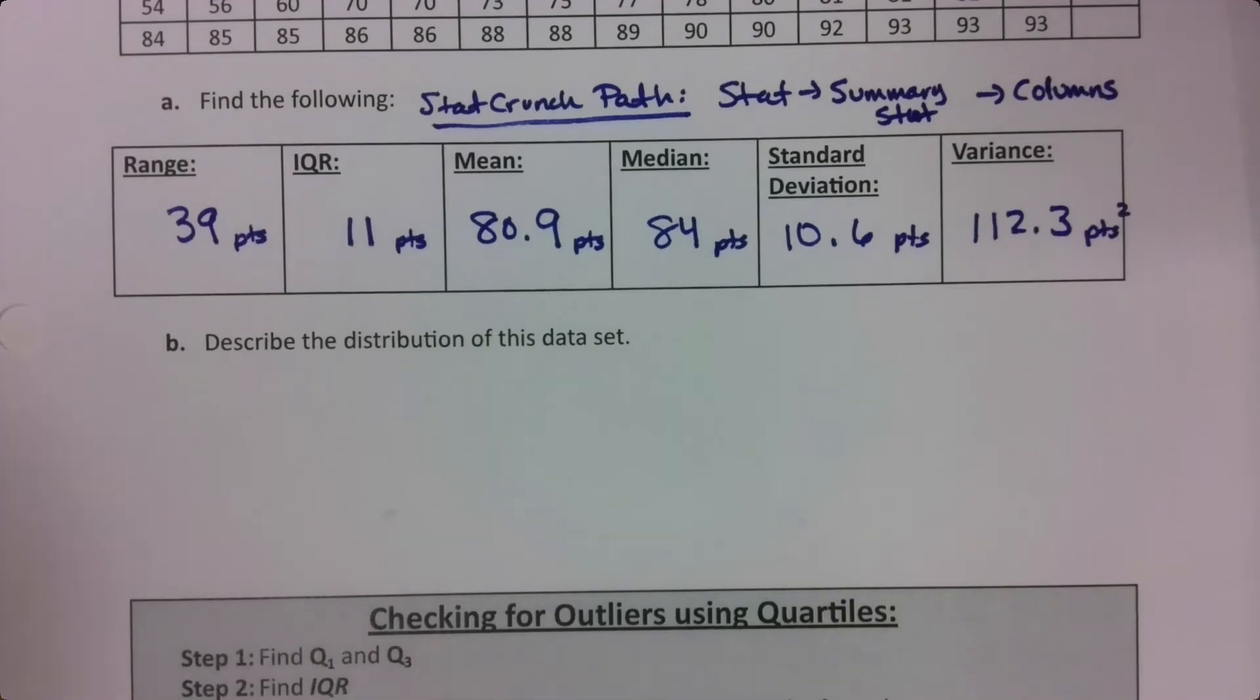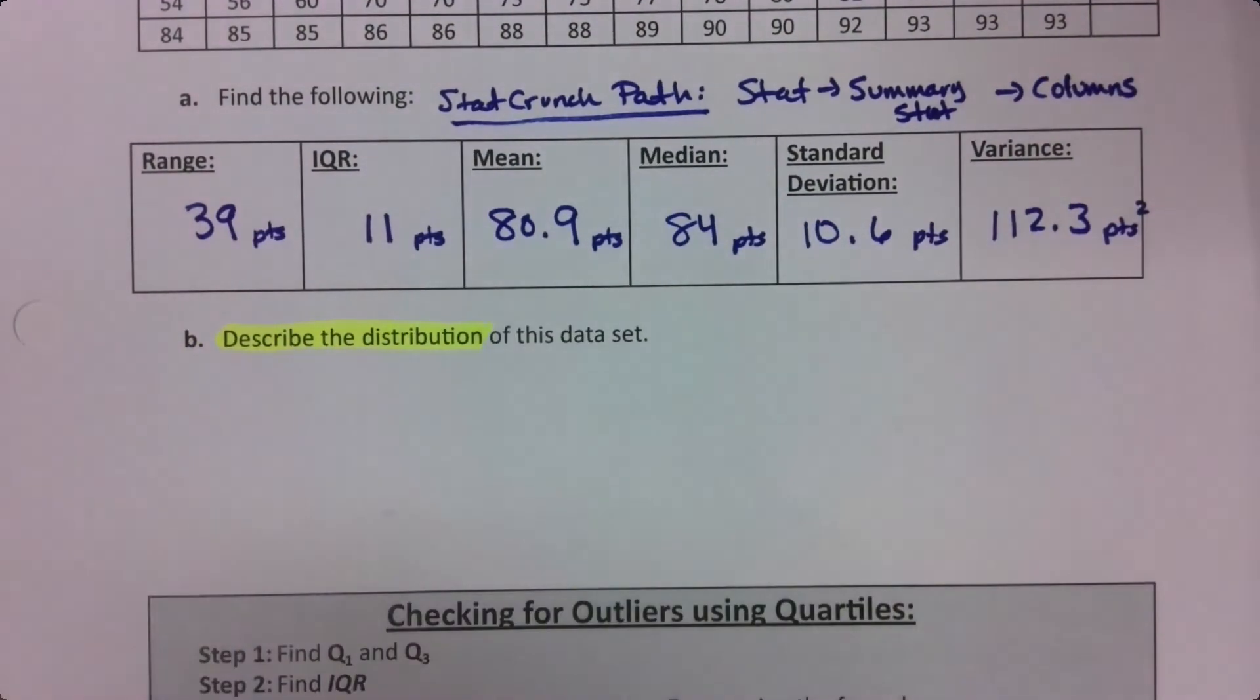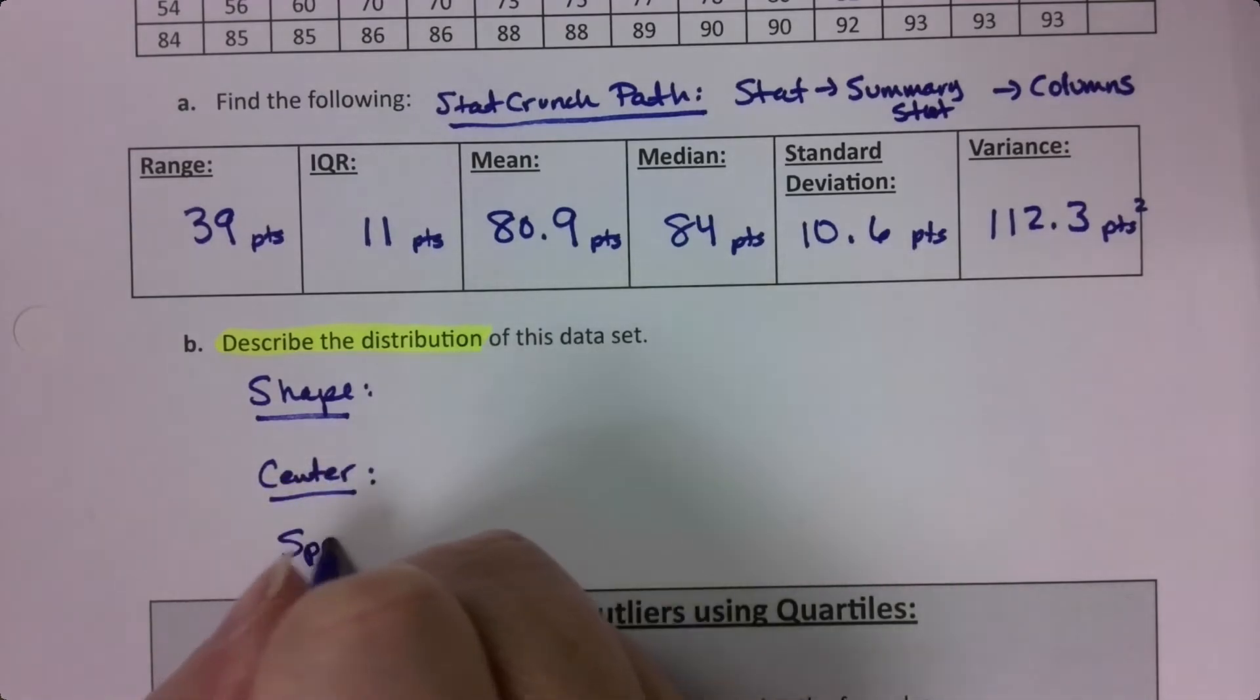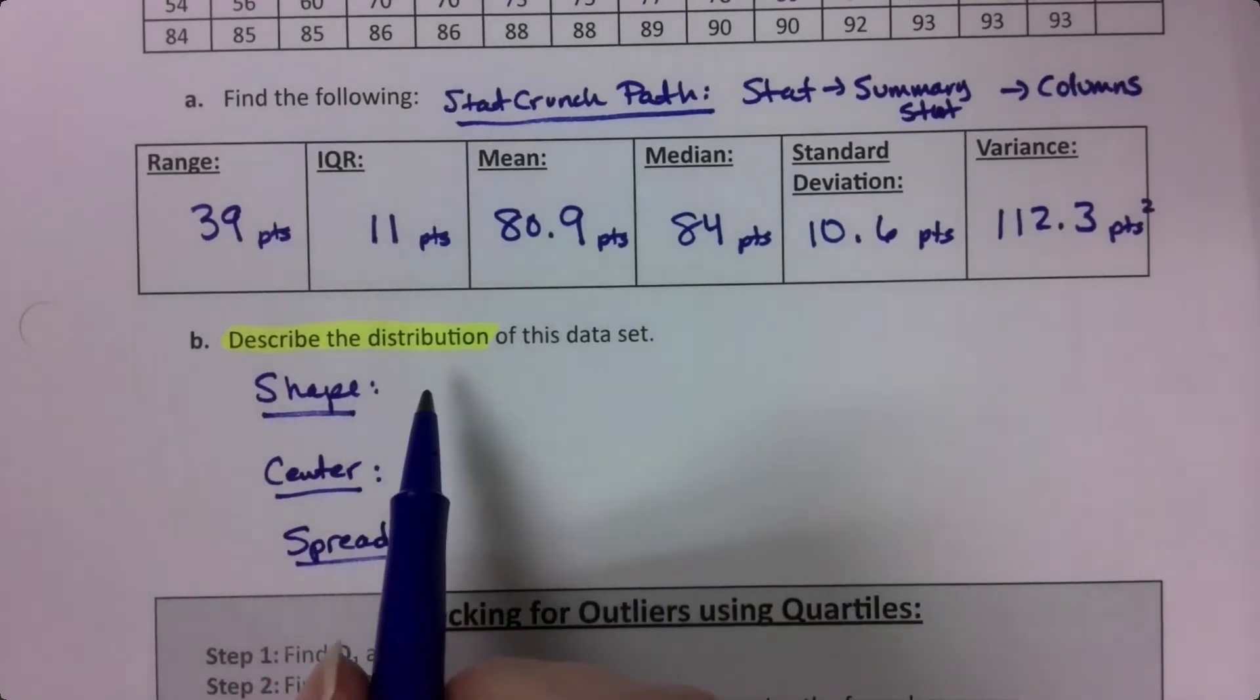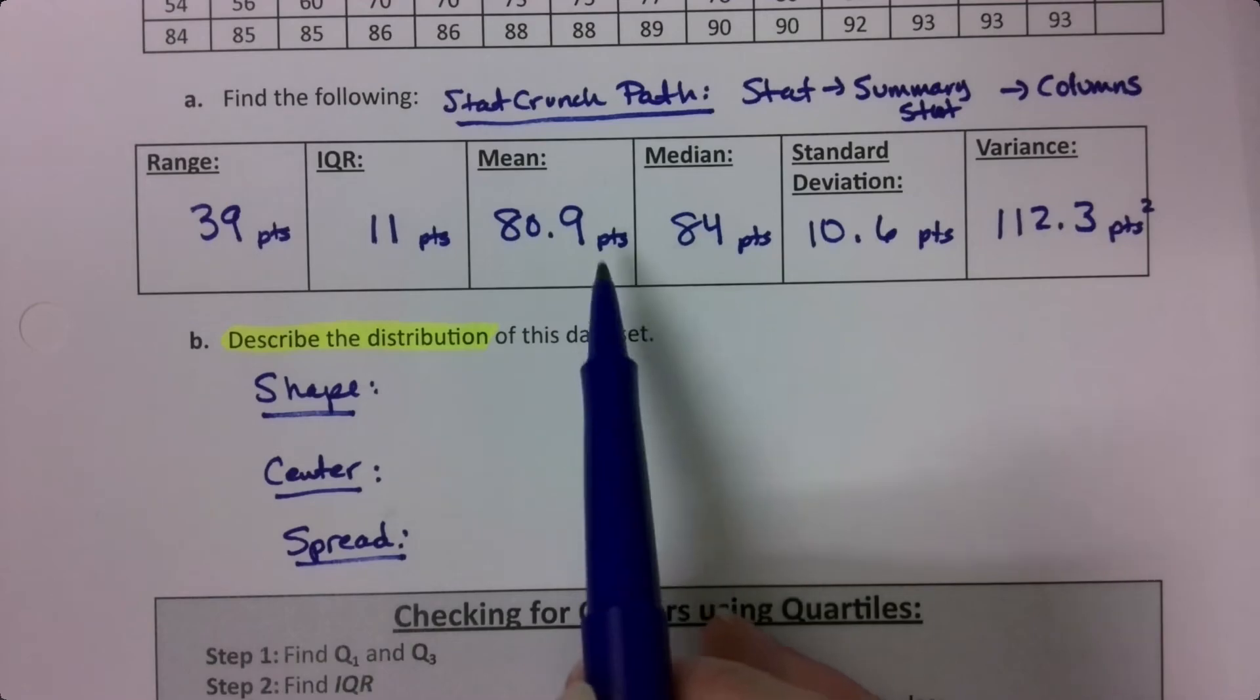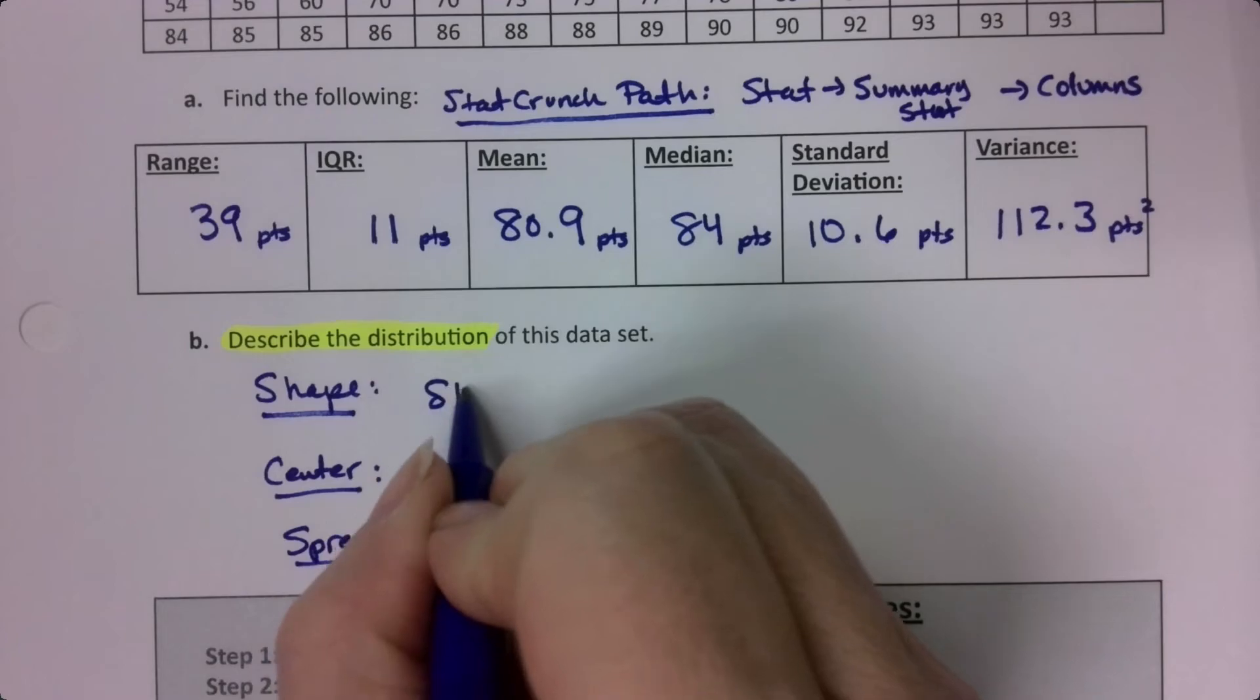Next, they would like us to describe the shape or describe this distribution. So that terminology is used by the author of the textbook. And what they want is the shape, the center, and the spread. So shape. Well, for shape, we basically have always had three options. Skewed left, skewed right, or symmetric. If I look at my mean and my median, this is skewed left.